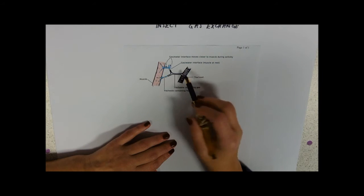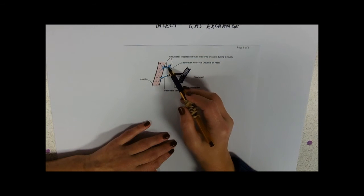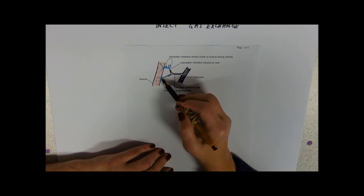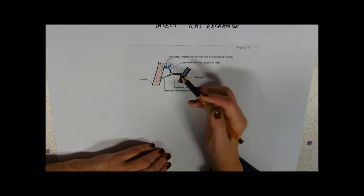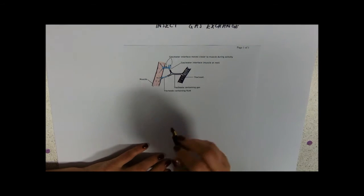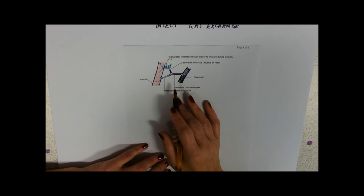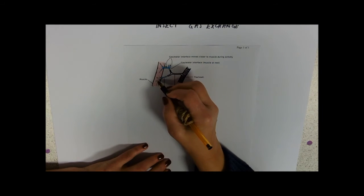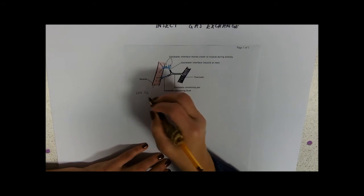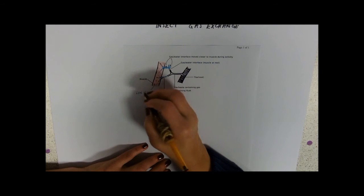So at rest, pretty much the ends of the tracheoles are fluid filled and that's going to slow down the diffusion into the muscles so they're not needing as much oxygen. When it starts to be more active, as it starts to run out of oxygen, the muscle cell makes lactic acid. So if the muscles start to use up the oxygen and make a very low oxygen concentration, they make lactic acid.